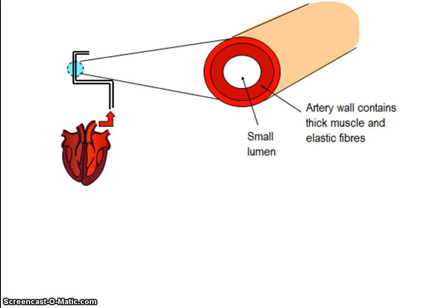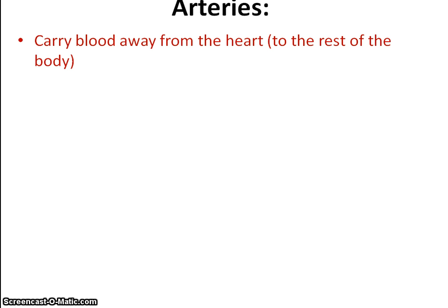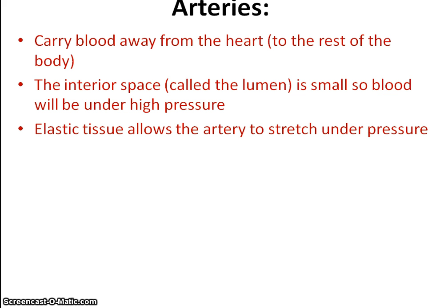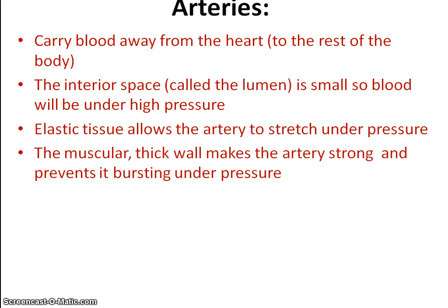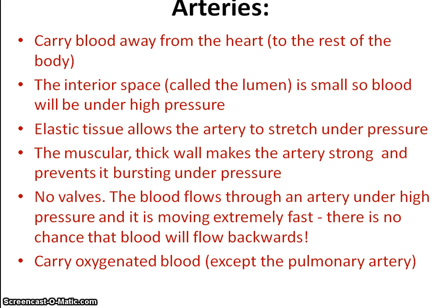Detail about the arteries. You can see the artery wall contains considerable muscle and elastic fibres. Key points: arteries carry blood away from the heart. The inner space, otherwise known as the lumen, is small and blood travels under high pressure. Highly elastic tissue allows the stretching of the arterial walls, strong enough to prevent any bursting of the artery under pressure. No valves are present due to high blood pressure and fast flow of blood, so there's no chance of it flowing in the wrong direction. Arteries carry oxygenated blood, other than the pulmonary artery.